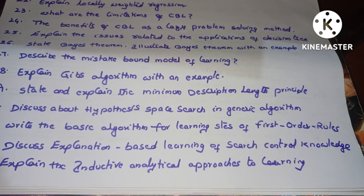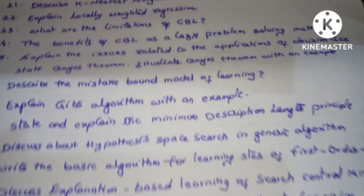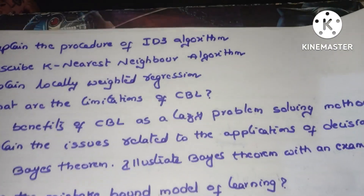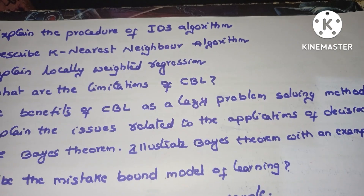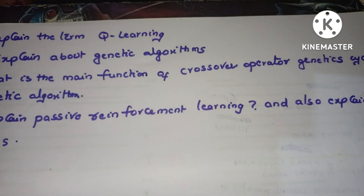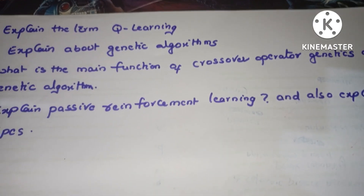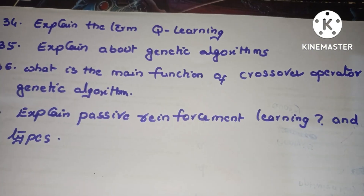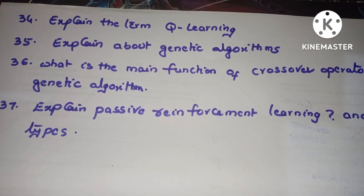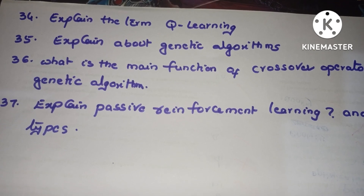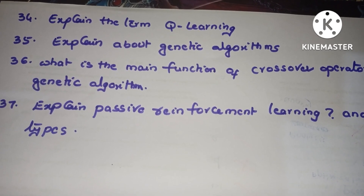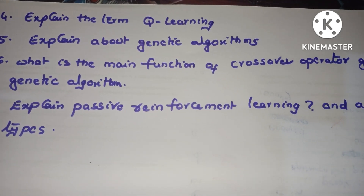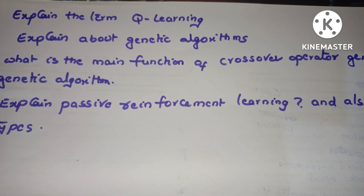These are the remaining unit important questions. Read all the questions carefully and take pictures of the questions. Unit 5 questions include: explain the term Q-learning, explain genetic algorithms, what is the main function of the crossover operator in the genetic cycle for genetic algorithm, and explain passive reinforcement learning and its types.